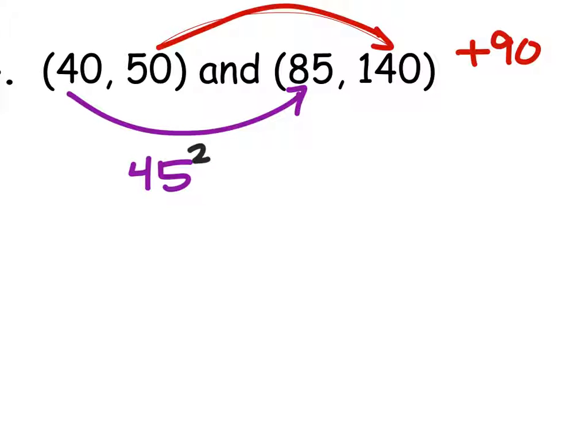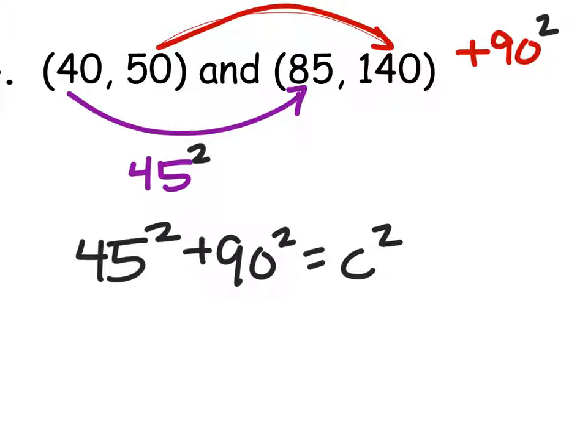So if we square these, by the way, those are the lengths of the legs right there. So if we square them and add them, then we should have the hypotenuse squared, like this.